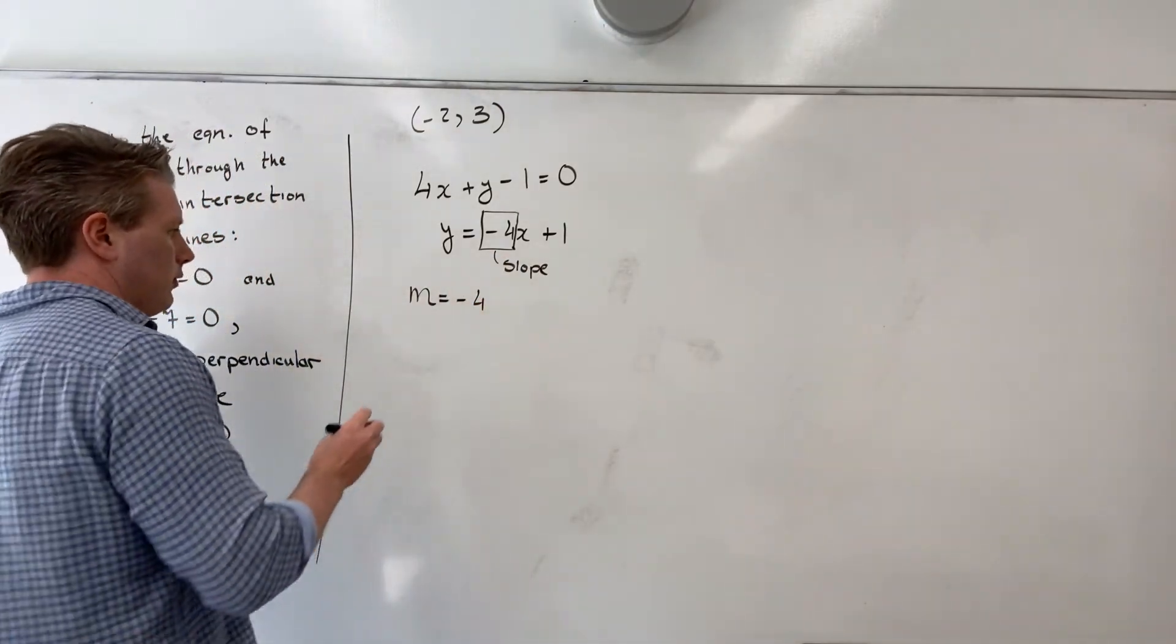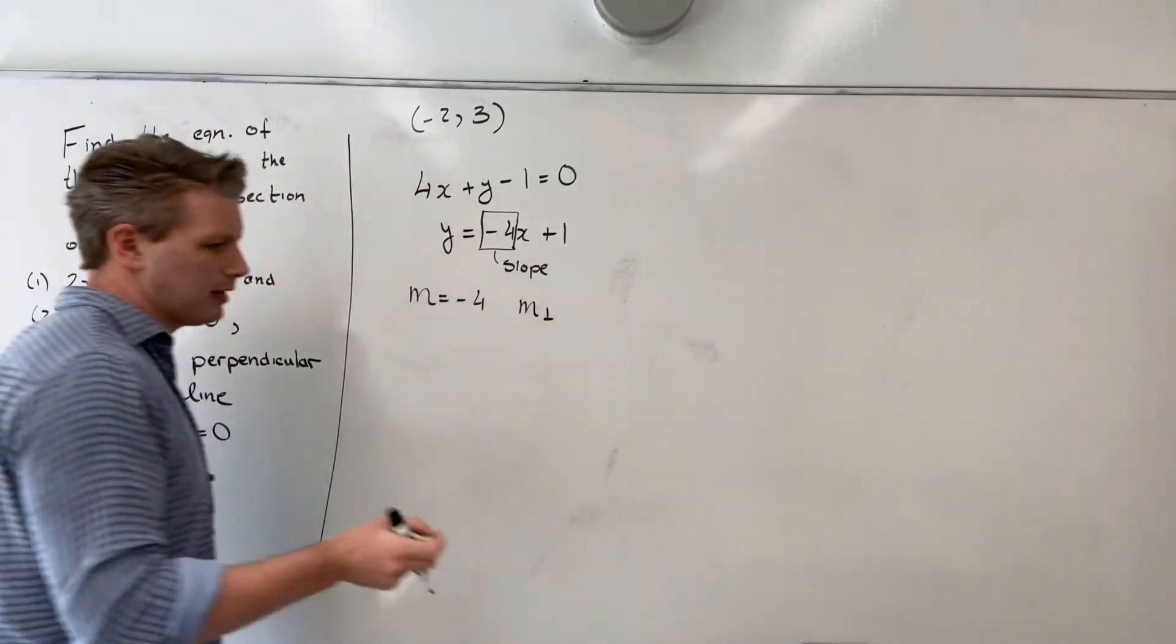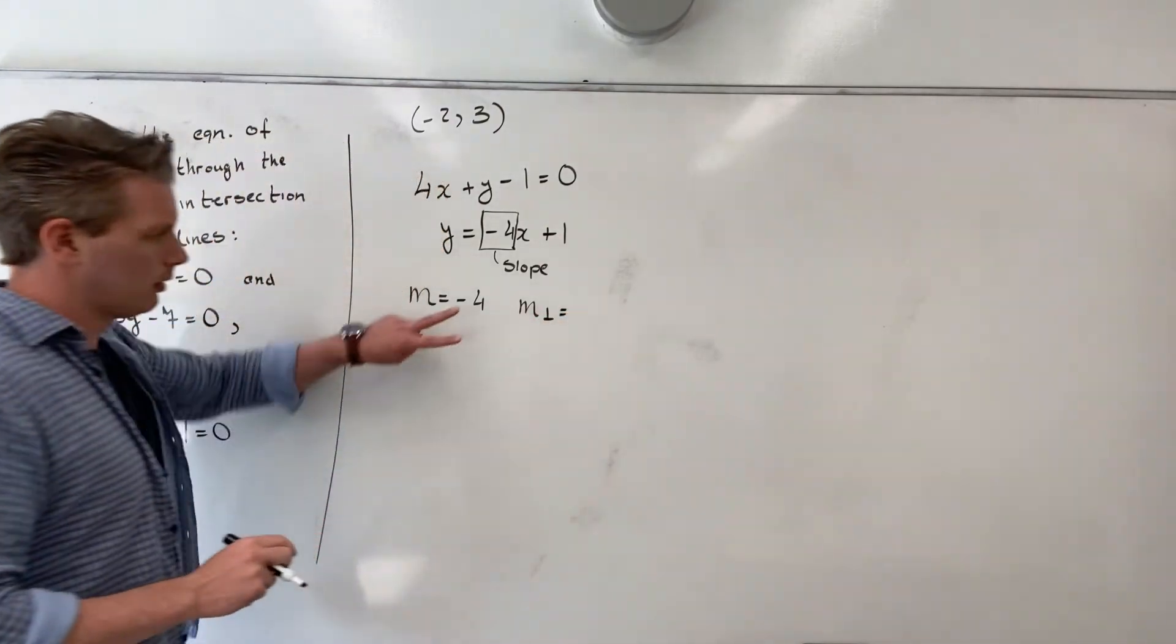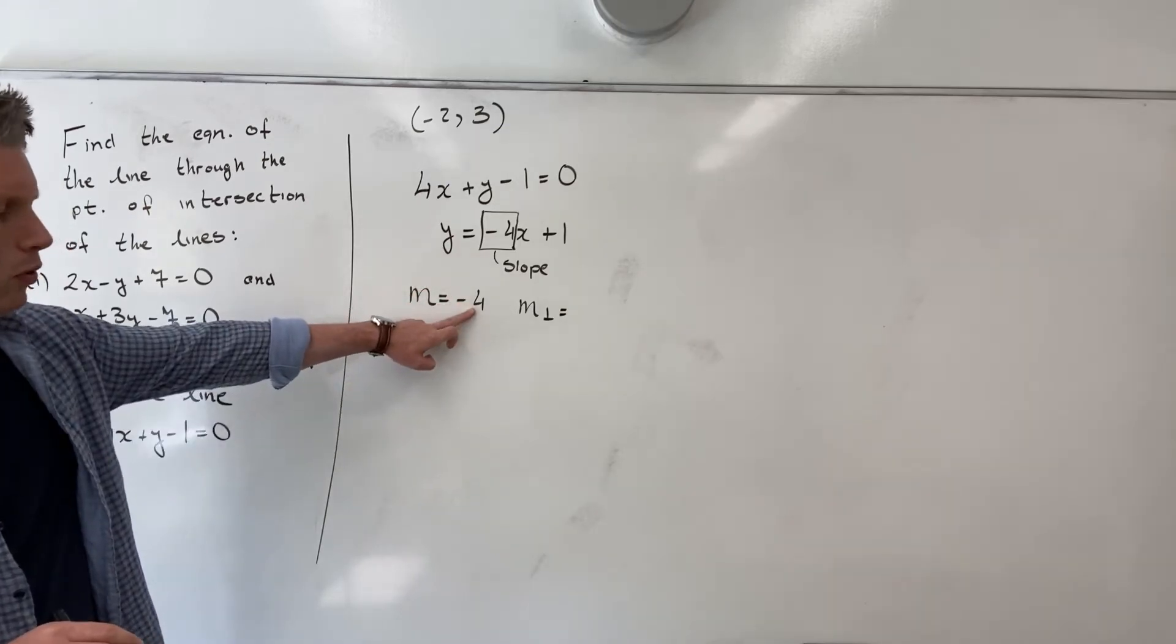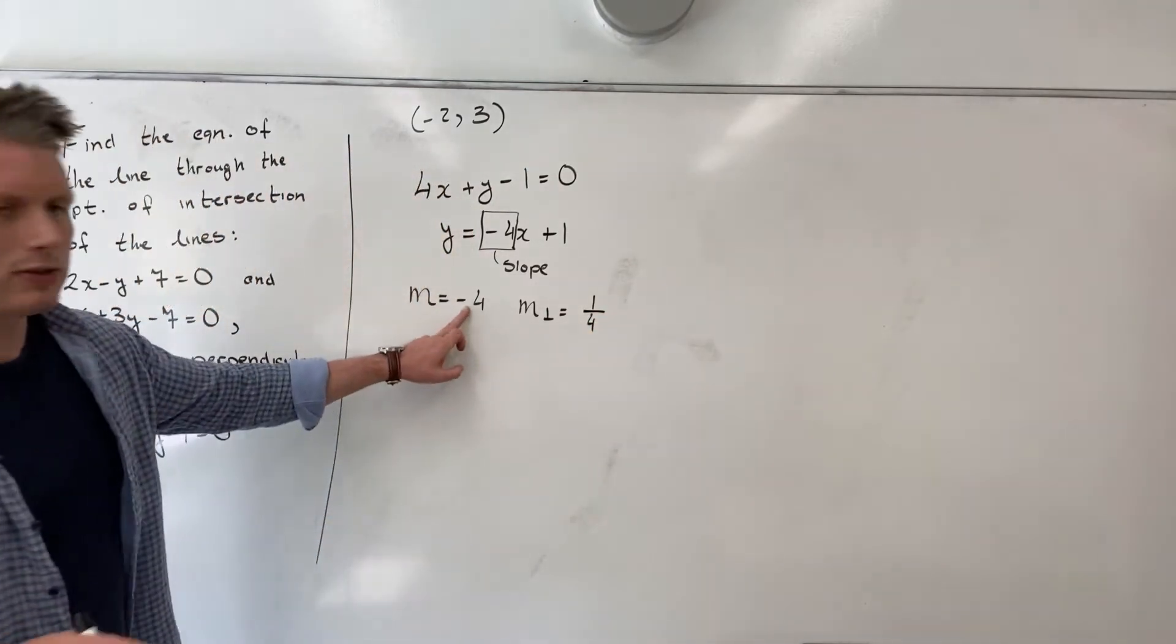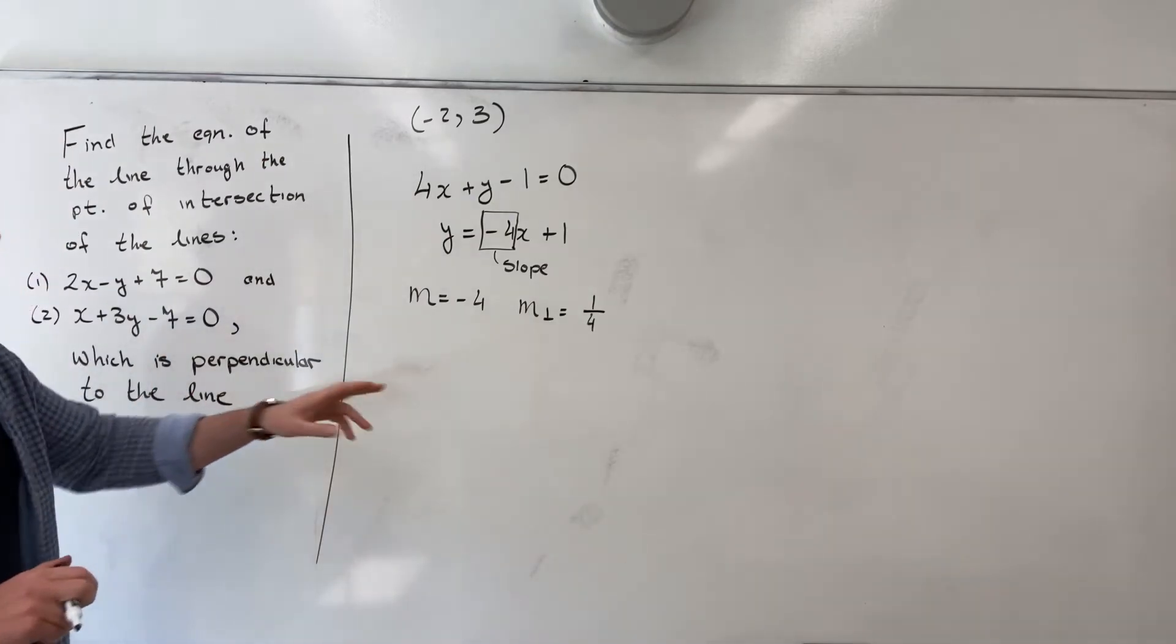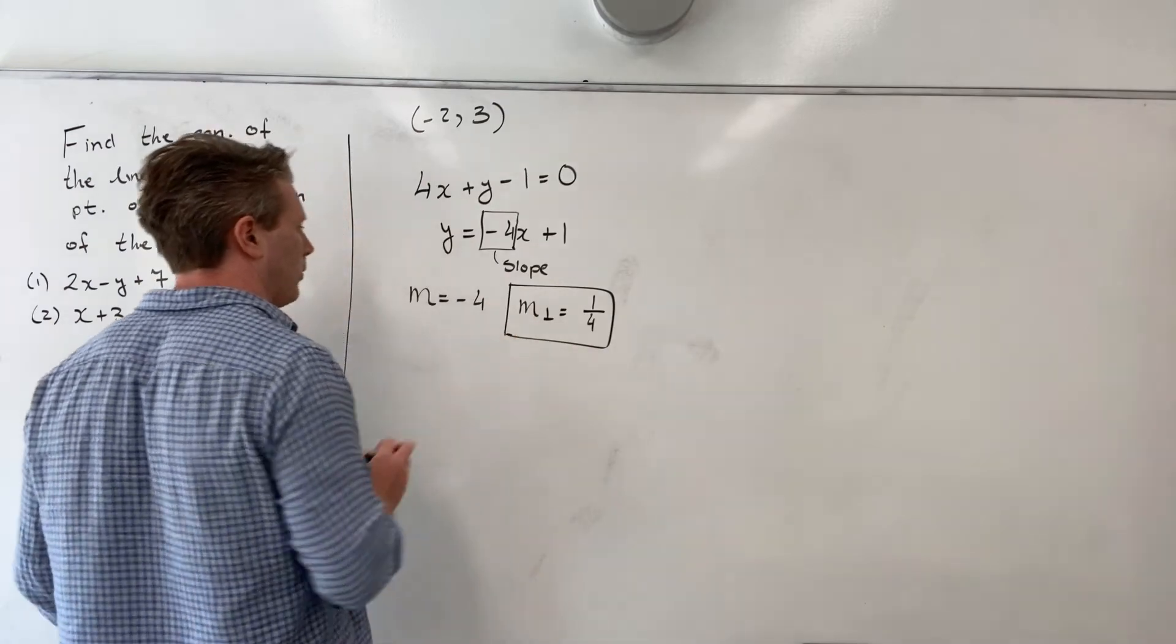It follows that my perpendicular slope, which is the slope of the line that I'm trying to find, is the negative reciprocal. So what I want to do is I switch the sign and invert it. 4 over 1 becomes 1 over 4, and I switch the sign, minus becomes a plus. So the slope of the line that I want to find is therefore a quarter. This is the slope that I want to use.